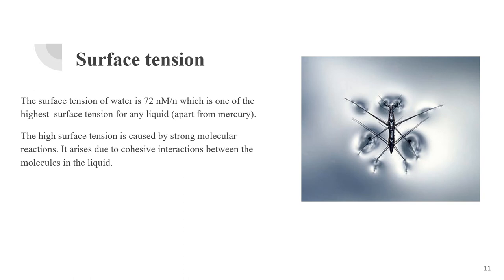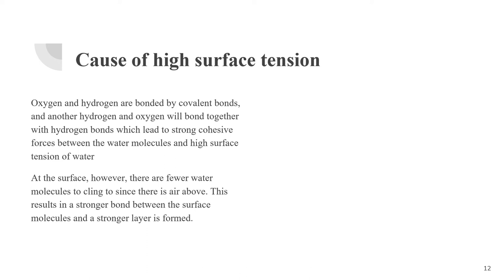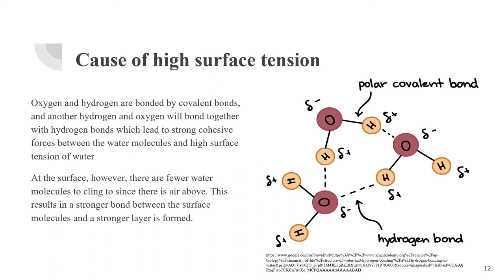Water surface tension. The surface tension of water is 72, which is one of the highest surface tensions for any liquid apart from mercury, because mercury is the only metal found in liquid form. The high surface tension is caused by strong molecular interactions and arises due to cohesive interactions between molecules in the liquid. In the image, we can see an insect floating because of the water's high surface tension. The causes of high surface tension: water consists of oxygen and hydrogen bonded together by covalent bonds. If additional hydrogen and oxygen atoms want to bond together, they bond with hydrogen bonds, leading to stronger cohesive forces between water molecules, which is why there is a high surface tension. At the surface, there are fewer water molecules to cling to since there is air above, resulting in a stronger bond between surface molecules and the formation of a stronger layer.